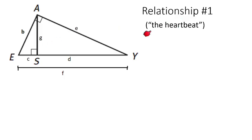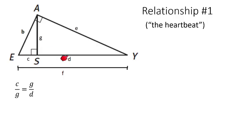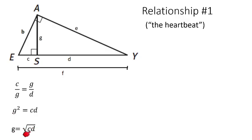This first relationship I call the heartbeat, and you'll see why in a minute. Since these triangles are similar, C over G equals G over D. If we cross-multiply, G times G equals C times D, giving us G squared equals CD. Taking the square root of both sides, G equals the square root of C times D. In other words, this length is the geometric mean of C and D. Geometric mean just means you multiply them and take the square root. I tend to operate more off of the proportion, because the proportion leads you to the geometric mean relationship — if you can write this proportion, you can solve all the problems you need to solve.